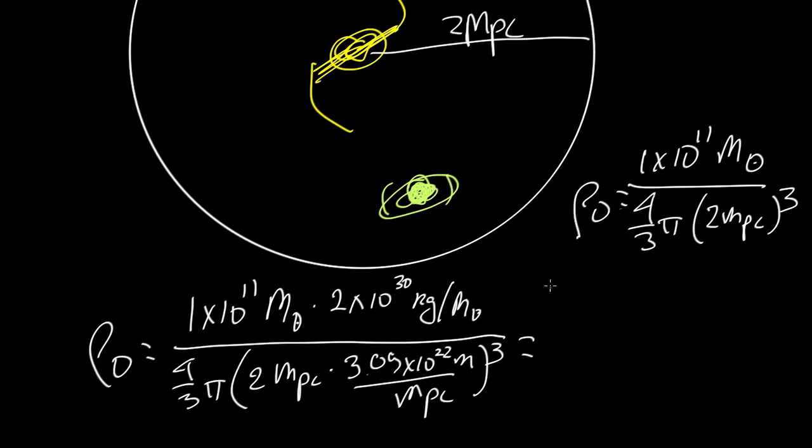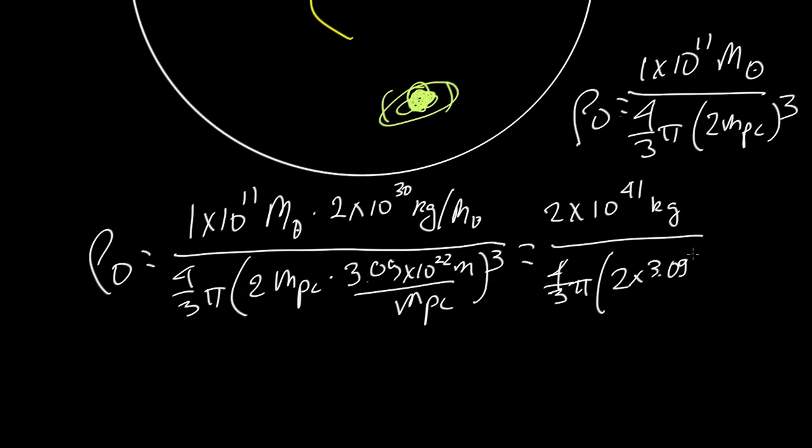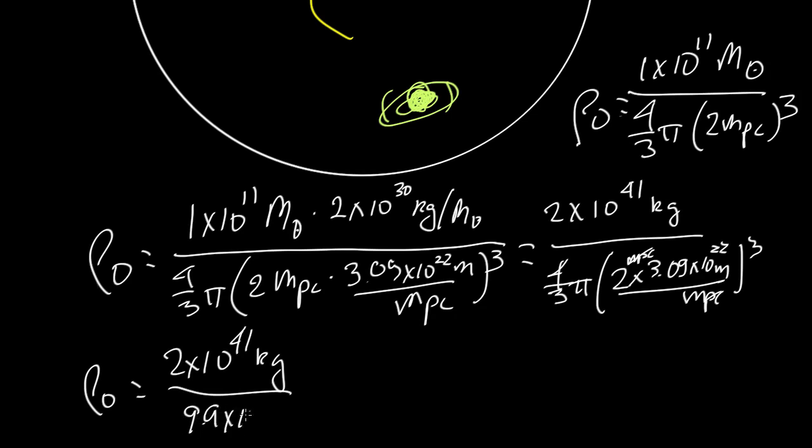And so in our little local part of the universe, there's 2 times 10 to the 41 kilograms. And then that is all in a volume, where we have 4 thirds pi times 2 times 3.09 times 10 to the 22 meters per megaparsec, so the megaparsecs cancel, that whole thing is cubed. So this gives us, then, for the calculation of the density, 2 times 10 to the 41 kilograms in the top, and a volume of 9.9 times 10 to the 68 meters cubed, and that gives us a total density in our part of the universe of 2 times 10 to the minus 28 kilograms per meter cubed.